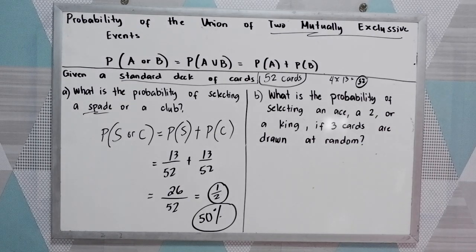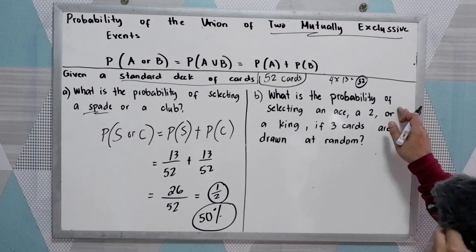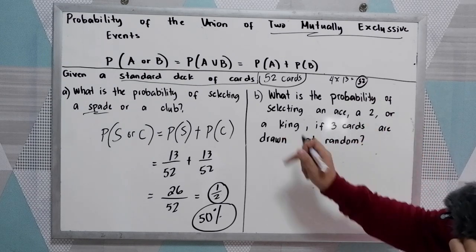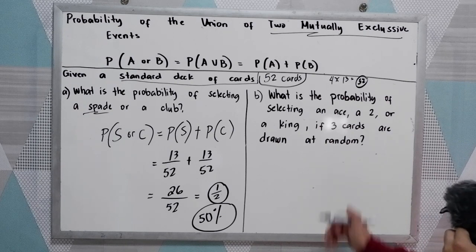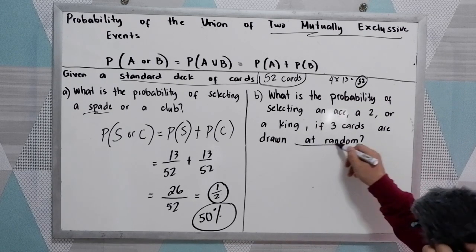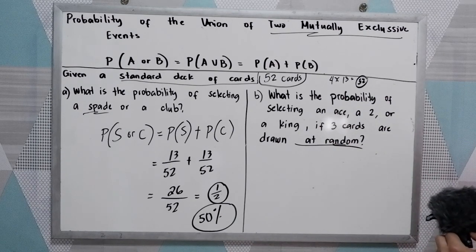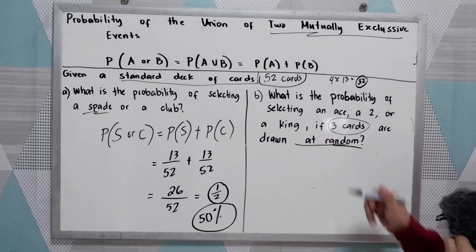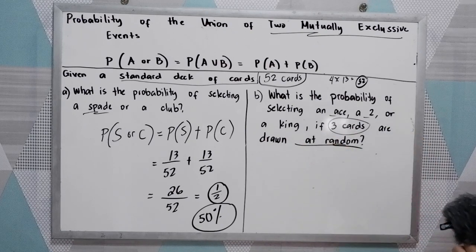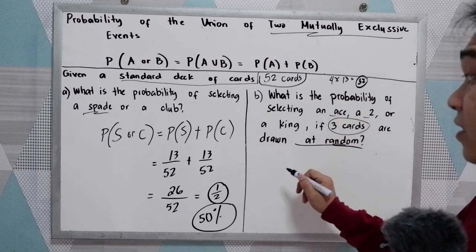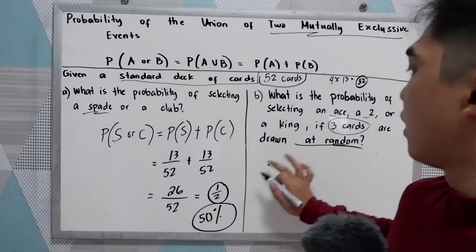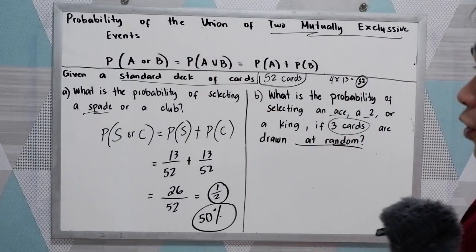Next, letter B: what is the probability of selecting an ace, a two, or a king if three cards are drawn at random? We are choosing three cards — it must be an ace, a two, or a king. We have four aces in a 52-card deck. Let us apply rule number two.